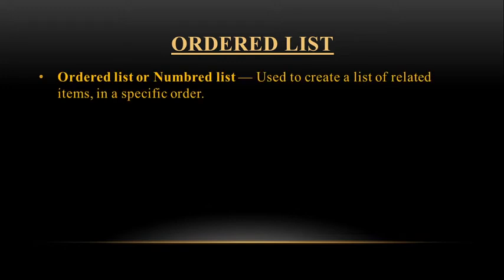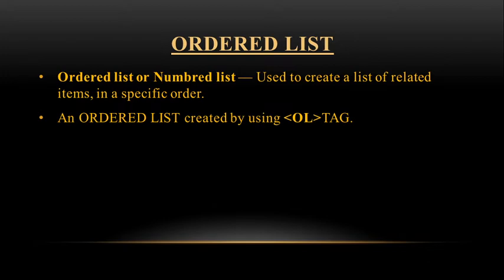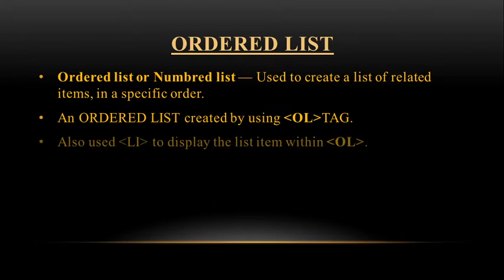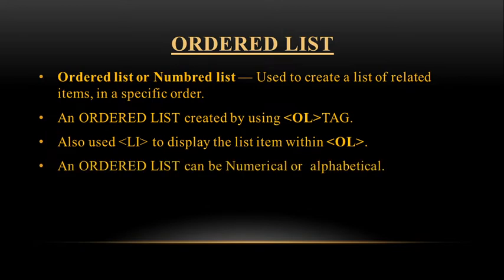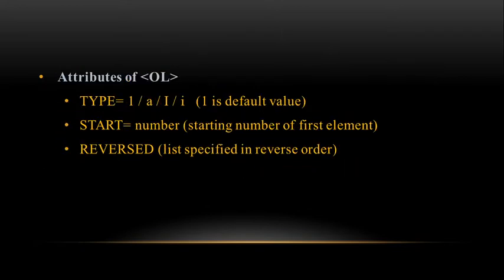Ordered list is also known as numbered list. It is used to create the list of related items in a specific order. An ordered list is created by using the OL tag, and we also use the LI tag to display the list items within the ordered list. An ordered list can be numerical or alphabetical.